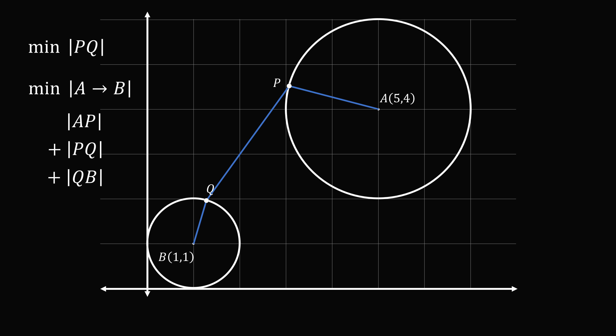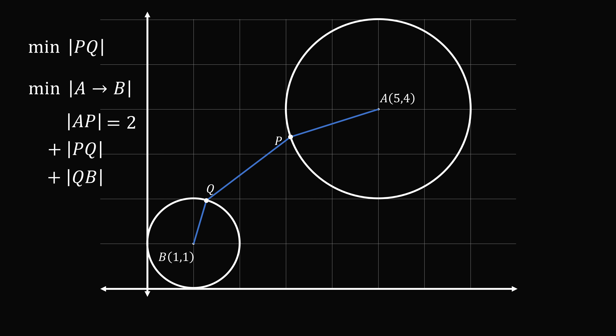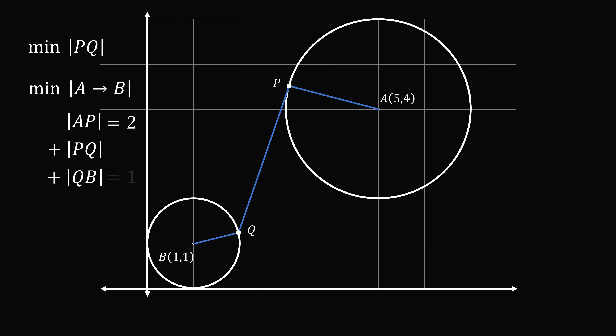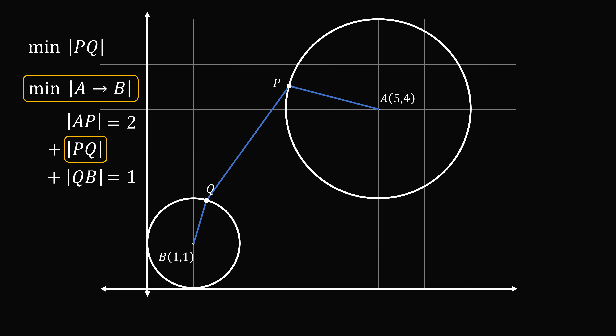AP is a radius of circle A, so its length is always equal to 2. QB is a radius of circle B, so its length is always equal to 1. Since AP and QB are fixed lengths, minimizing the total distance from A to B is equivalent to minimizing the length of PQ. So if we minimize the path from A to B, we solve the problem.